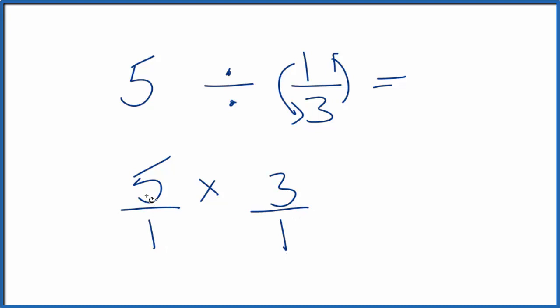Again, we call this 5 over 1. 5 times 3 is 15. 1 times 1, that equals 1. 15 over 1 is 15.